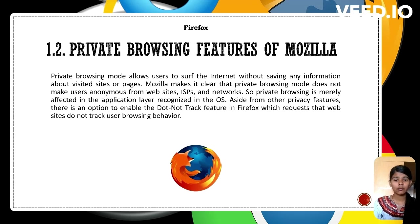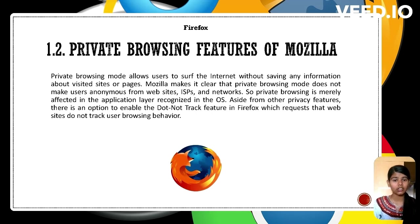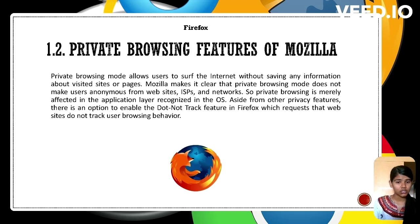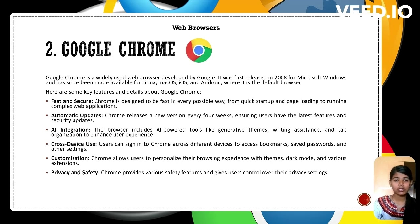Private browsing mode in Firefox enables users to browse the internet without saving site visit information, but it does not provide anonymity from websites, ISPs, or networks. It operates at the application layer of the OS. Additionally, Firefox offers a Do Not Track feature that can be enabled to request websites not to track the user's browsing behavior.